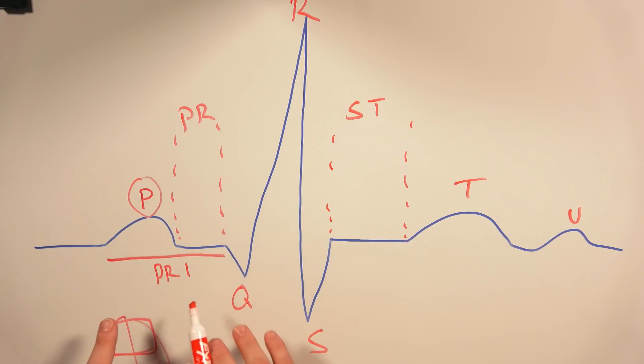All right, this flat interval until the next spike represents the time where the impulse is held up in the AV node before passing to the ventricles. This is called the PRI, the PR interval.